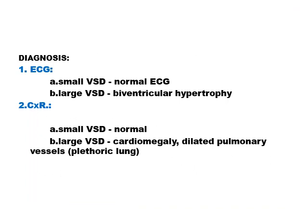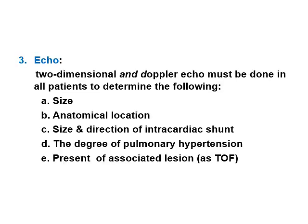Diagnosis of VSD relies on ECG, chest X-ray, and echo. On ECG, small VSD is normal, but large VSD shows biventricular hypertrophy. On chest X-ray, small VSD is normal, but large VSD shows cardiomegaly, dilated pulmonary valve, and pulmonary vascular prominence due to increased blood flow through the pulmonary artery — resulting in a plethoric lung from the large amount of blood going to the lungs.